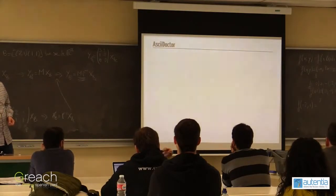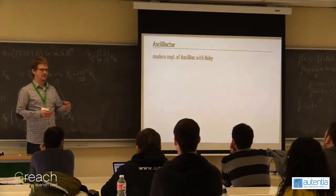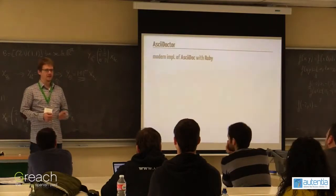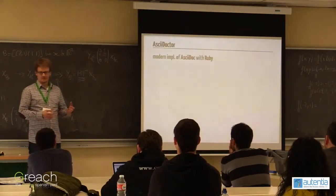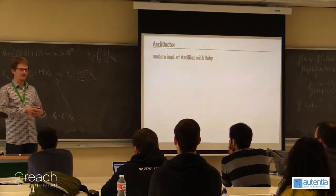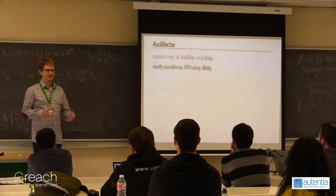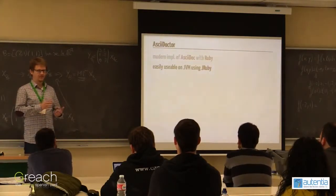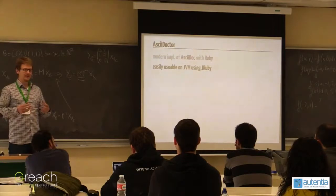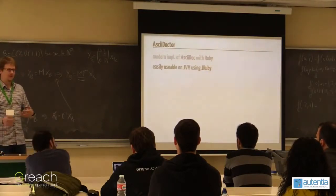From AsciiDoc to AsciiDoctor: the original AsciiDoc processor got fairly old and was hard to integrate with modern tools, so AsciiDoctor was created — a new modern implementation of the AsciiDoc parser and converter using Ruby. Using Ruby brings the nice advantage that on the JVM, there is JRuby. By this combination, we are able to use all the AsciiDoctor functionality through JRuby wrappers in our JVM world. So there's already been enough work done that we can integrate it into our tool chain, as I'll show you in the examples. Even though it's implemented in Ruby, we as JVM developers don't need to care about that.